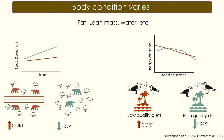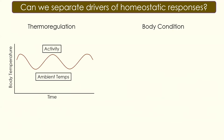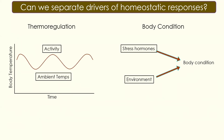Many studies didn't find direct connections between corticosterone and body condition, instead just associating corticosterone with the environment. We clearly need a method to help separate these relationships between environment, body condition, and stress hormones. Knowing how corticosterone works, we can ask: can we separate drivers of homeostatic responses? Thermoregulation is determined by activity periods and ambient temperatures, while body condition is shaped by breeding season, phenology, and life history traits. The environment can also increase stress hormones without necessarily affecting body condition.